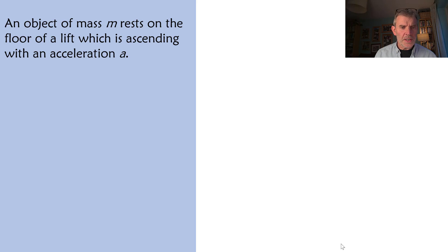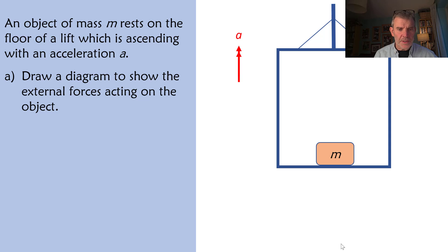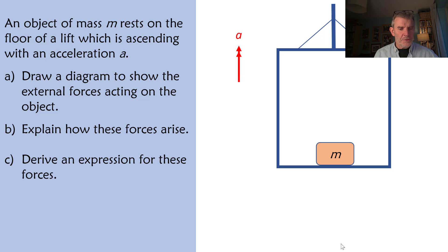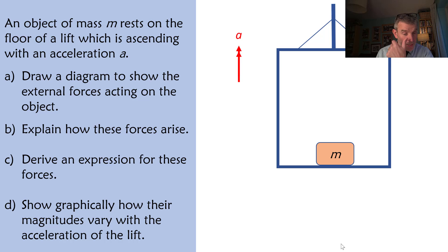So here's a question: an object of mass m rests on the floor of a lift which is ascending with an acceleration a. A, draw a diagram to show the external forces acting on the object. B, explain how these forces arise. C, derive an expression for these forces. And D, show graphically how their magnitudes vary with the acceleration of the lift.